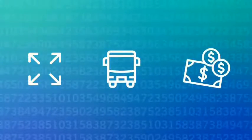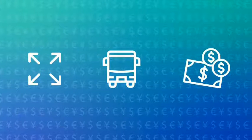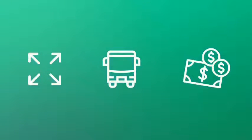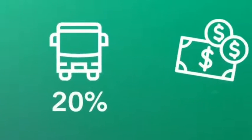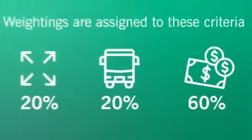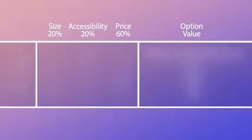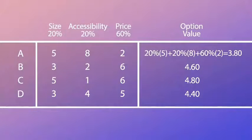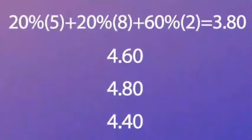Next, you determine how important each of these criteria is to you. You compare these criteria — for example, size is 20% important, accessibility is 20%, and price is 60%. So weightings are assigned to these criteria. It is now easy to identify which option is the best: you multiply the weightings of the criteria by the scores, and the sum of the scores for each option represents its value.